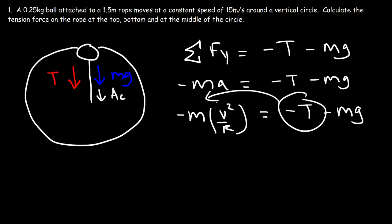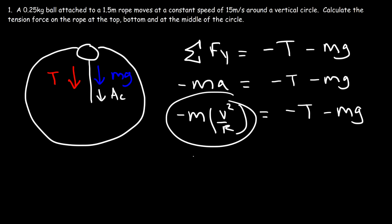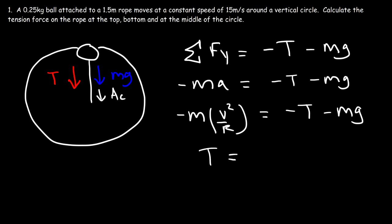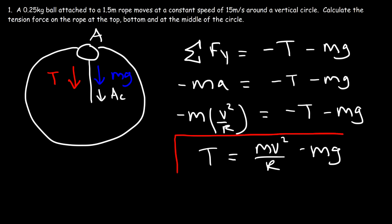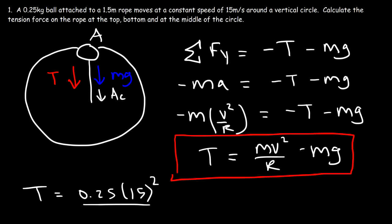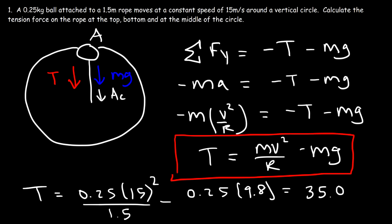Our goal is to solve for the tension force at the top. Rearranging, positive t equals mv²/r minus mg. So the tension force at point A is the difference between the centripetal force mv²/r and the weight force mg. Calculating: t = 0.25 × 15² ÷ 1.5 − 0.25 × 9.8, which gives a tension force at the top of about 35 newtons.